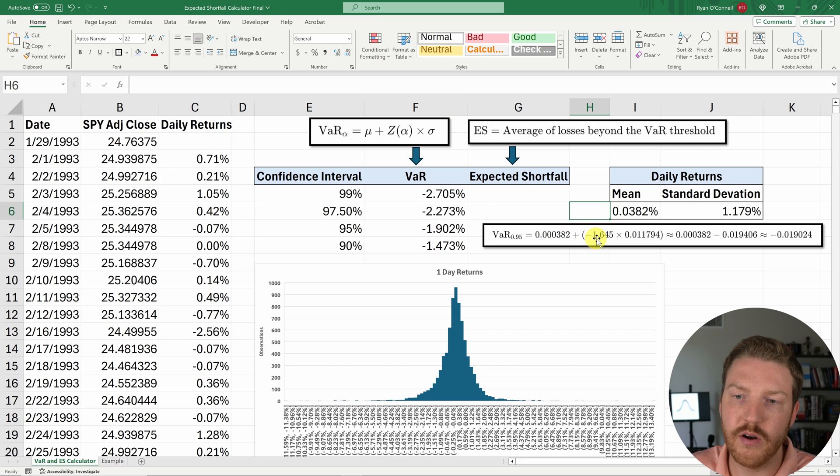So if the Z score for the fifth percentile of the tail would just be negative 1.645, and you just multiply that by the standard deviation. So basically all you're doing with VaR is you're just starting at the mean and then multiplying that standard deviation by however many standard deviations you are away from that mean. So the further out into the tail, the more negative it gets.